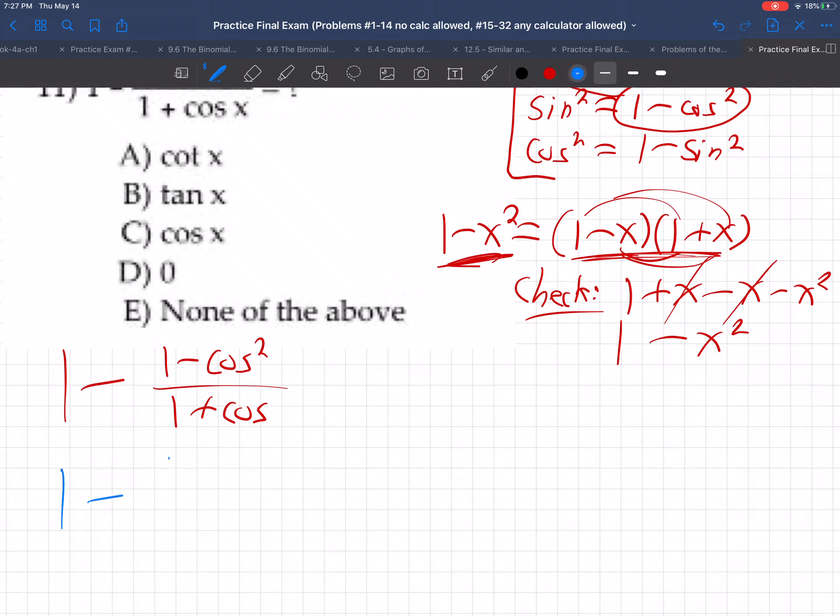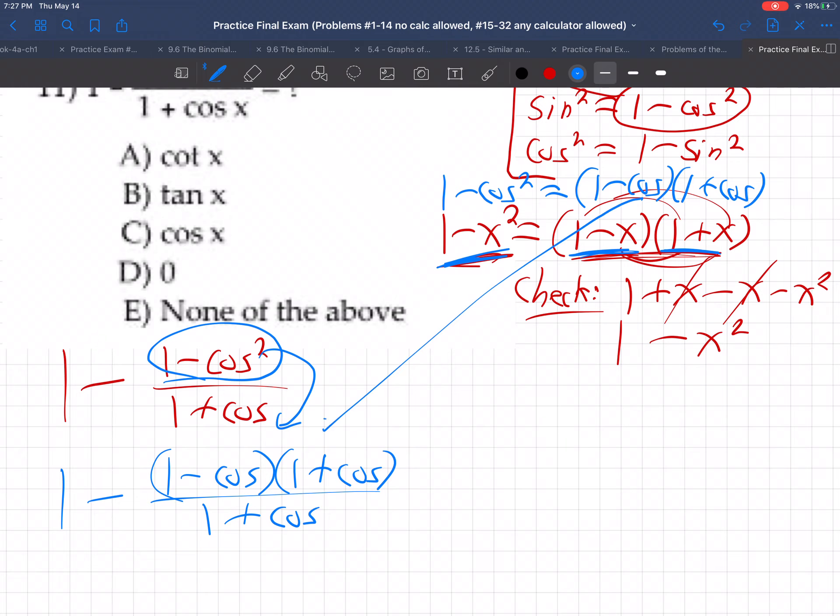Well, that means this becomes 1 minus, on the top here, 1 minus cosine, 1 plus cosine. This right here breaks into those two. If 1 minus x squared is 1 minus x times 1 plus x, then 1 minus cosine squared is 1 minus cosine times 1 plus cosine. Same thing, just like an x but it's a cosine. So I use that right here. This 1 minus cosine squared becomes that.